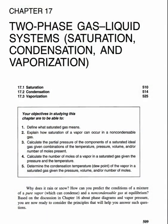This is chapter 17 from Himmelblau and Riggs, 7th edition, and it's entitled Two-Phase Gas-Liquid Systems, and in parentheses it says Saturation, Condensation, and Vaporization. Essentially, these are all big fancy words for talking about situations where you have both liquids and vapors or gases present in the same system, which comes up a lot.